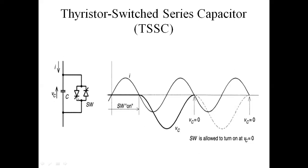These two switches are connected in anti-parallel: one switch controlling the positive half cycle, the second controlling the negative half cycle. Observing the output waveform — from 0 to 90 degrees, switch S1 is on. When switch S1 is on, current flows in the circuit. At the same time, the voltage VC — this thick line — the Voltage Across the Capacitor is 0. From 0 to 90 degrees, the Voltage Across the Capacitor is 0. When the switch is turned on, VC is 0.